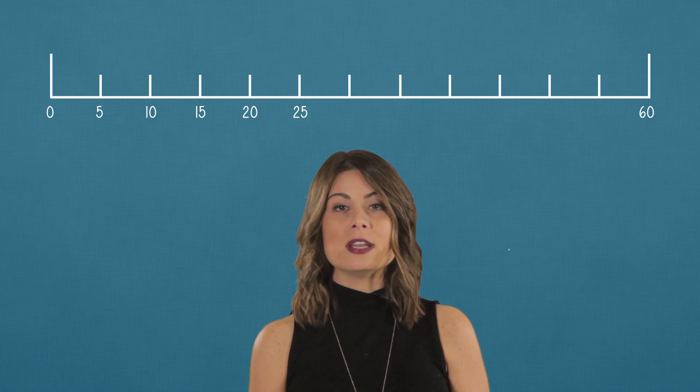So let's number our number line. Zero, then 5, 10, 15, 20, 25, 30, 35, 40, 45, 50, 55, and 60. That looks familiar. We have our number line again.